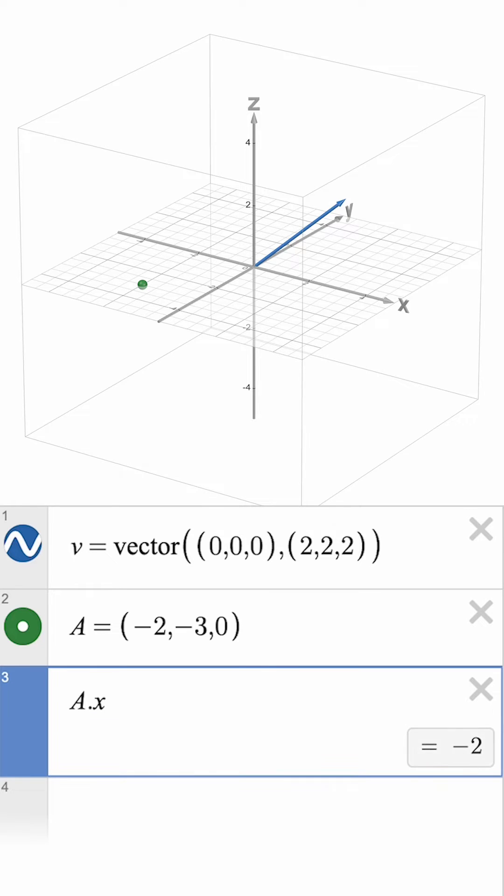A.x indicates the x component of our point is negative 2, A.y reveals the y component is negative 3, and A.z shows us the z component is 0.